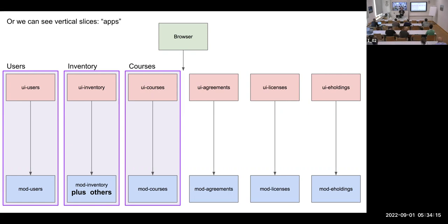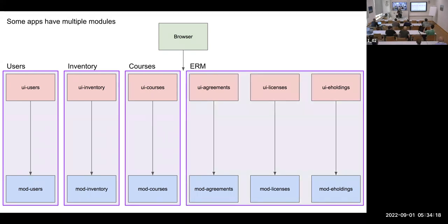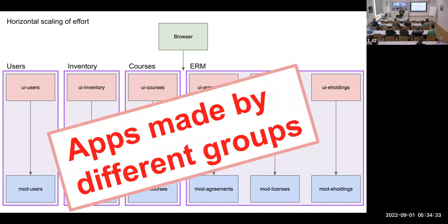There are much bigger and more complex apps like ERM — electronic resource management — which consists of half a dozen different UI modules that you run as part of Stripes. The critical thing about FOLIO as a scalable ecosystem is that all these apps can be and are made by different groups. Index Data did the early work on the users app; ERM was largely done by Knowledge Integration and Frontside; EBSCO have created a bunch of apps. On the whole it works surprisingly well, with some degree of harmony across the shared UI and back end areas.